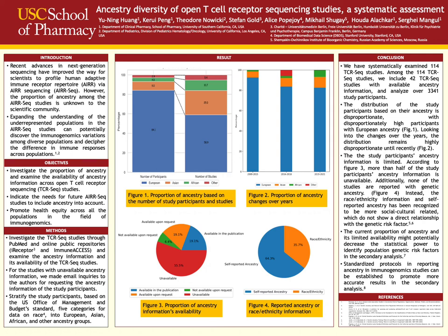Recent advances in next generation sequencing tools have provided modern scientists and bioinformaticians with effective bioinformatics software and tools to profile human adaptive immune receptor repertoires. However, no studies have estimated the proportion of ancestry in the field of adaptive immune receptor repertoire studies. It is known that the ancestry distribution in genome-wide association studies is disproportionate, mostly conducted under European ancestry. Accordingly, we want to examine the proportion of ancestry in the field of T-cell receptor sequencing studies.